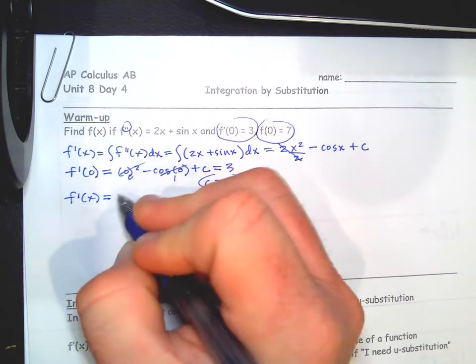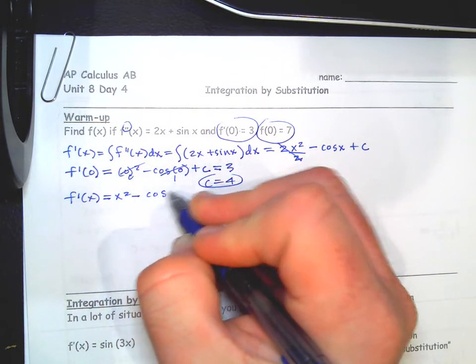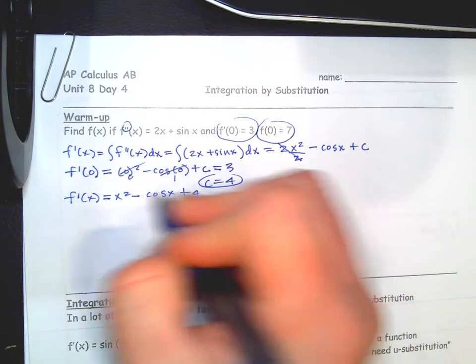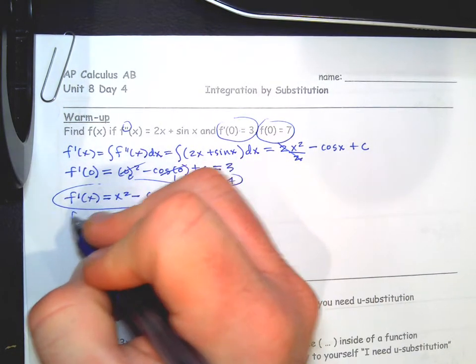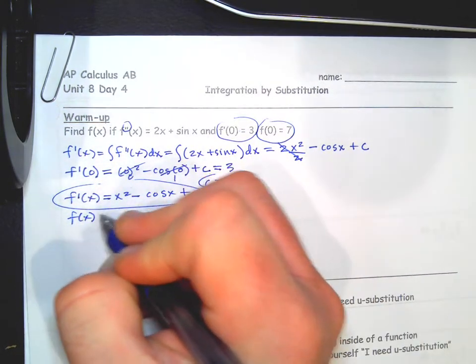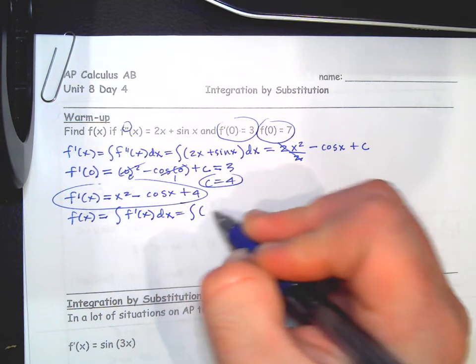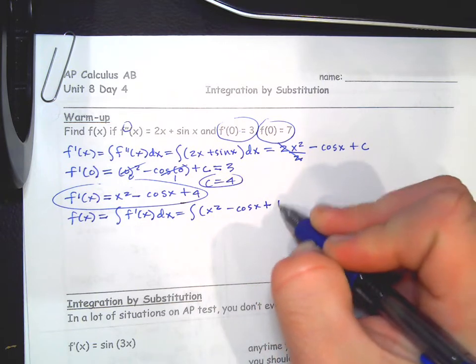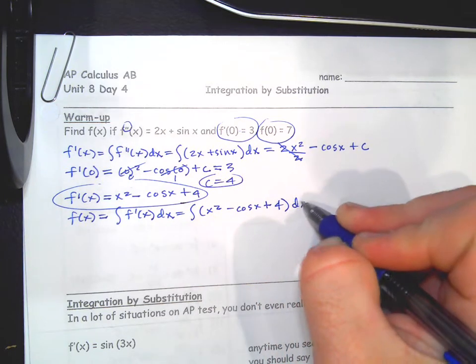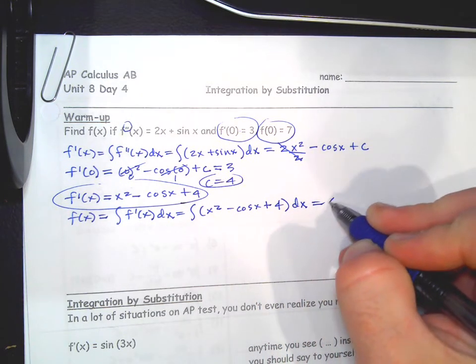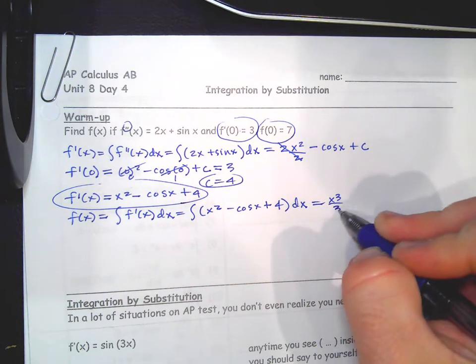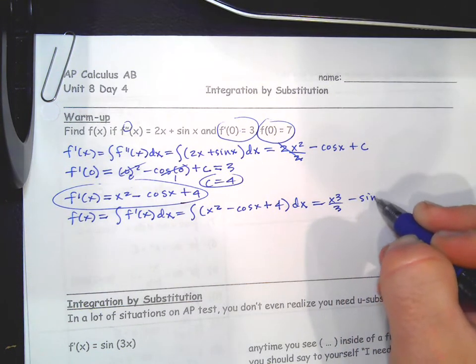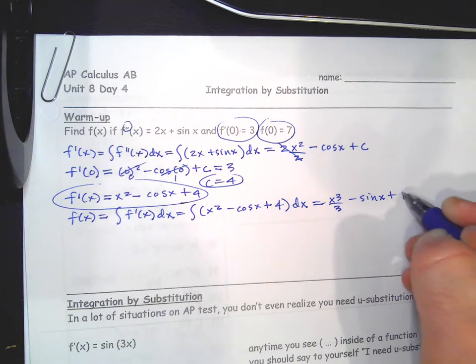Now we're going to find the C value by plugging in the initial condition for the derivative. Plug in 0, and the answer should come out to 3. Cosine of 0 is 1, not 0, so you add one to both sides, giving C equals 4. So your derivative is x² minus cosine x plus 4.